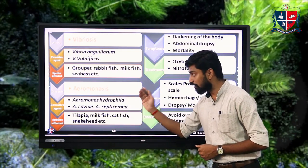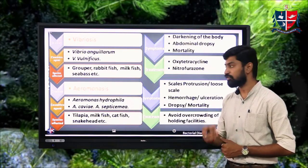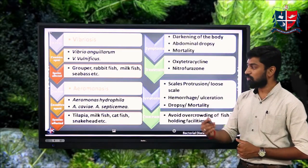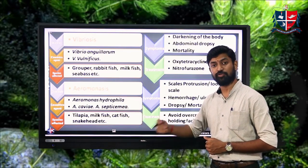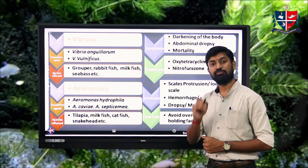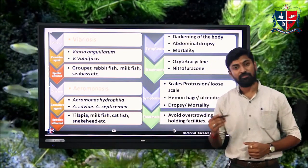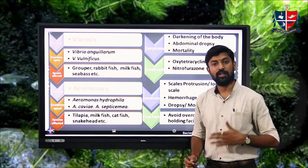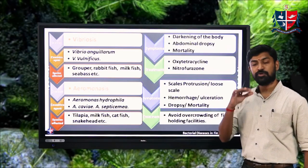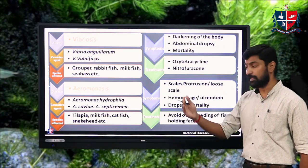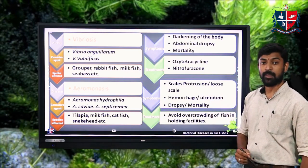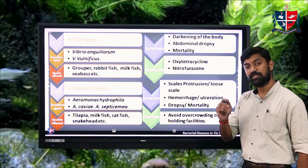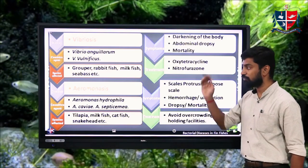Aeromonasis is caused by Aeromonas hydrophila and Aeromonas sobria. It mainly affects tilapia, milkfish, catfish, snakehead, and others. Major symptoms include scale protrusion or loosening of scales due to dropsy, hemorrhage leading to ulceration, and mortality.